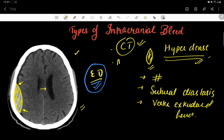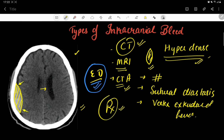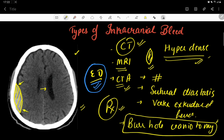After CT scan, MRI can also be used, followed by CT angiography or MR angiography to identify the injured artery. Regarding prognosis, even in cases of a large hematoma the prognosis is quite good after treatment. The treatment involves burr hole craniotomy to completely remove the hematoma, and if the patient receives timely treatment, the prognosis of epidural hematoma is quite good.